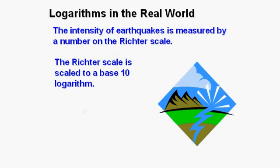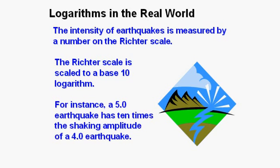The intensity of earthquakes is measured by a number on the Richter scale and the Richter scale is scaled to a base 10 logarithm. For instance, a 5.0 earthquake has 10 times the shaking amplitude of a 4.0 earthquake.